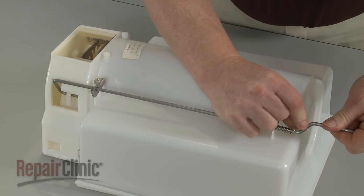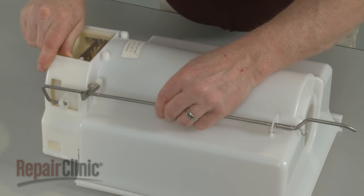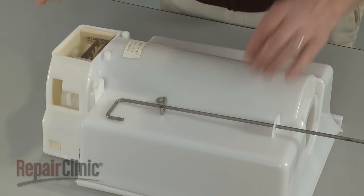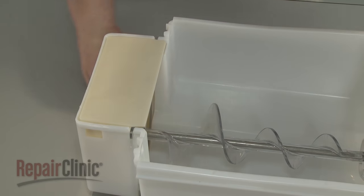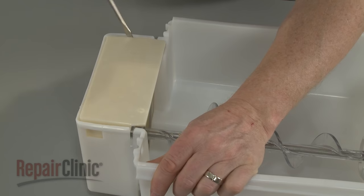Unhook the spring so you can detach the arm from the ice deflector. Use a flathead screwdriver to depress the retaining tabs to release the auger assembly.